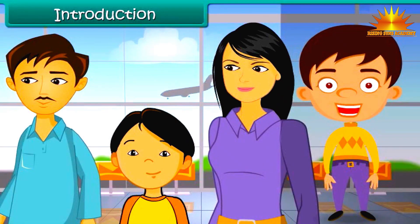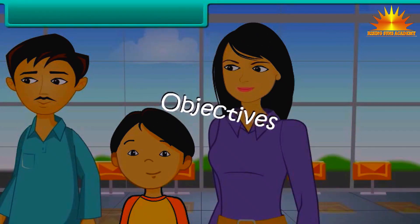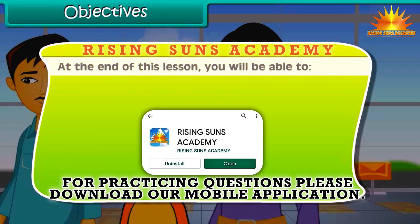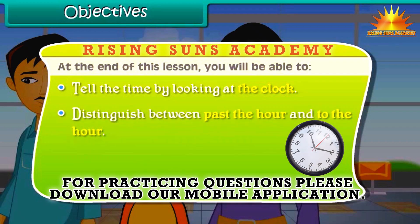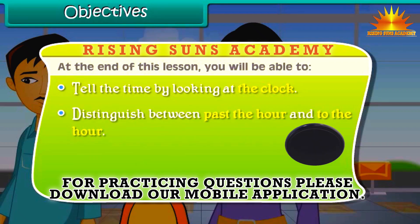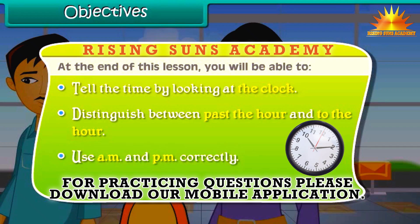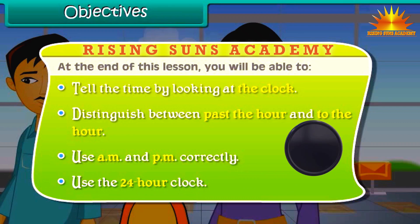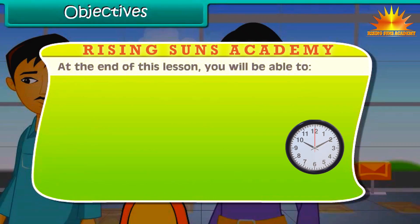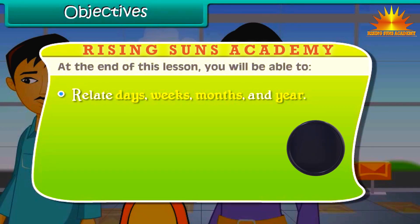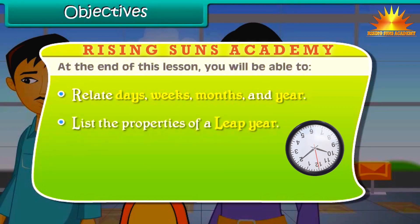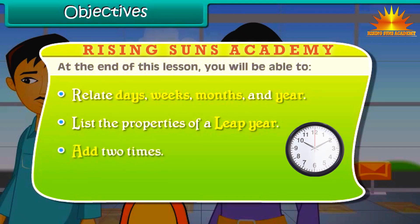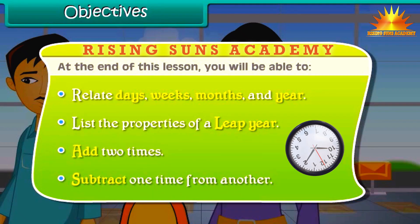In this lesson, you will learn about time in detail. At the end of this lesson, you will be able to: tell time by looking at the clock; distinguish between past the hour and to the hour; use AM and PM correctly; use the 24-hour clock; relate days, weeks, months and year; list the properties of a leap year; add two times; and subtract one time from another.